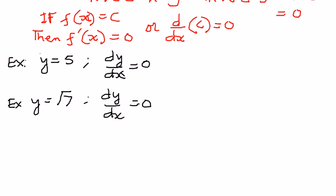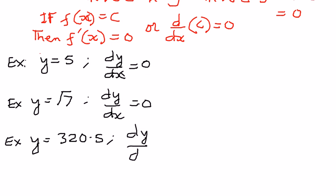Let's take another example. If y is equal to 320.5, dy by dx is going to be equal to 0. So the derivative of this constant number, 320.5, with respect to x is 0. Whenever we differentiate a constant number with respect to x, it is going to be equal to 0. In my next presentation, we shall see the proof of the power rule followed by examples.